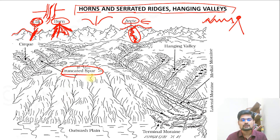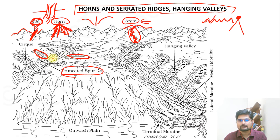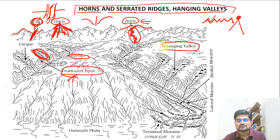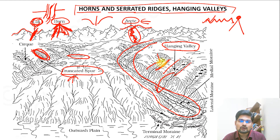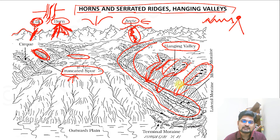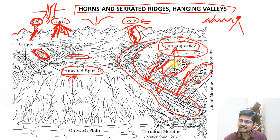The truncated spur occurs when spur lines are eroded by glacial action, leaving elongated stump-like features resembling an elephant's trunk. The hanging valley is a tributary valley at a higher elevation than the main glaciated valley. From the higher level, meltwater flows down into the main valley. These tributary valleys appear to 'hang' above the main valley and can serve as evidence of ancient glaciation even after glacial retreat.